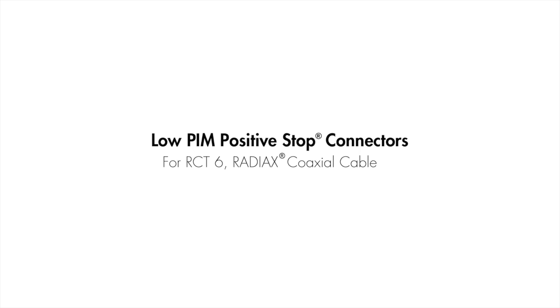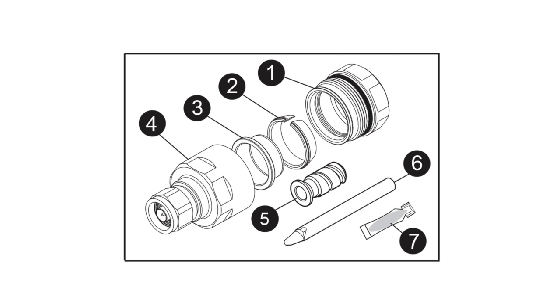Begin by disassembling the connector. There are five component parts: the clamping nut, clamp ring, sleeve, inner assembly stub, and connector body.